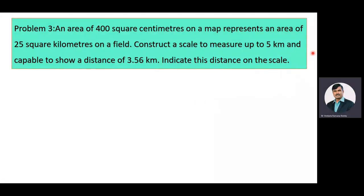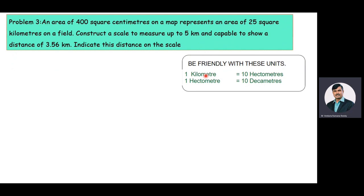Now we'll write the data related to the problem. Before that, we need to have perfect clarity about unit conversions. As you know, one kilometer is equal to 10 hectometers and one hectometer is equal to 10 decameters. The first step under the construction of a diagonal scale is to find the representative fraction value. Here the RF value is not given directly — we need to calculate it from the given statement.